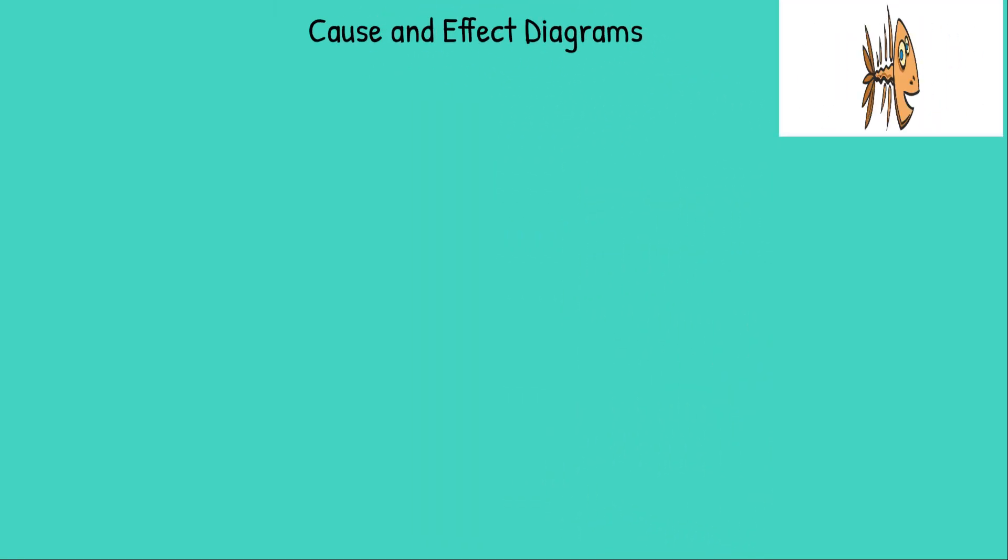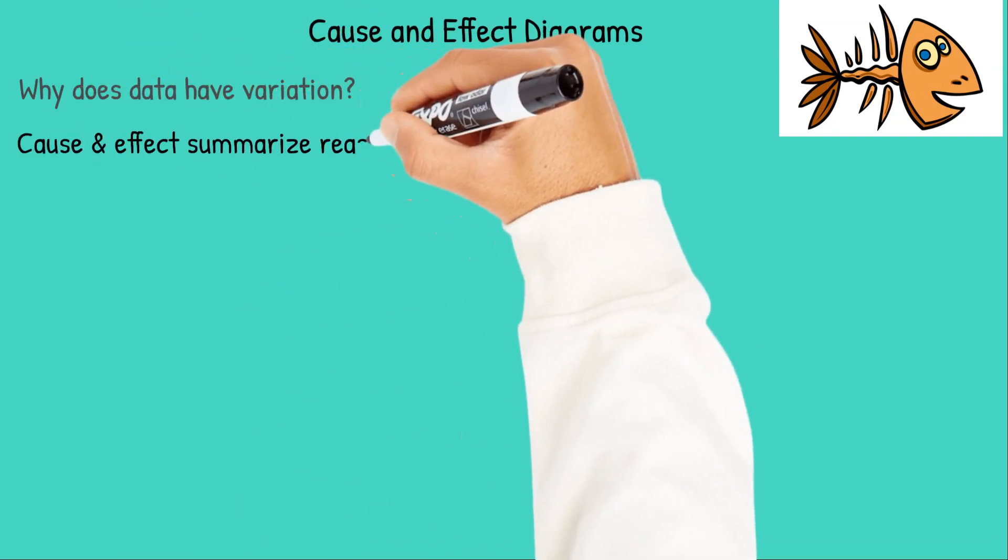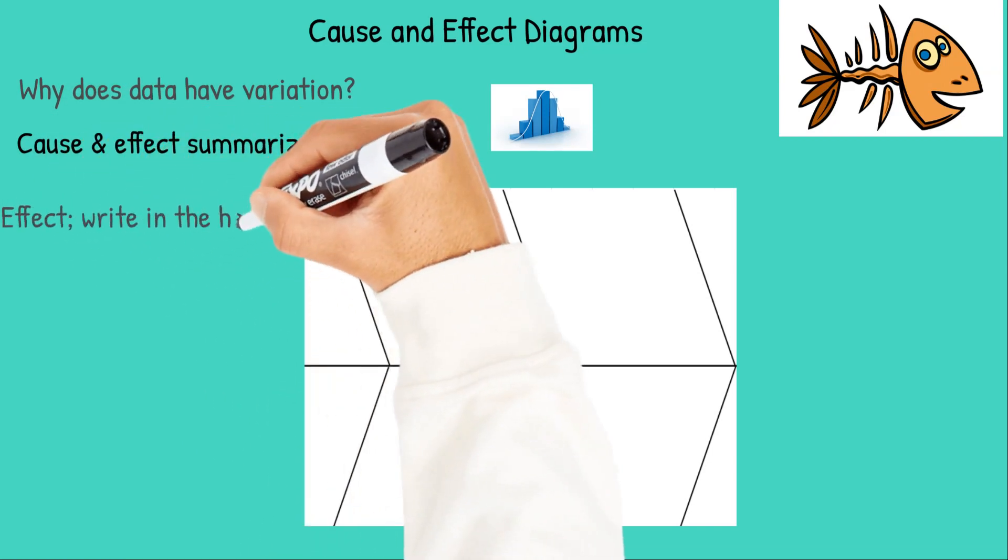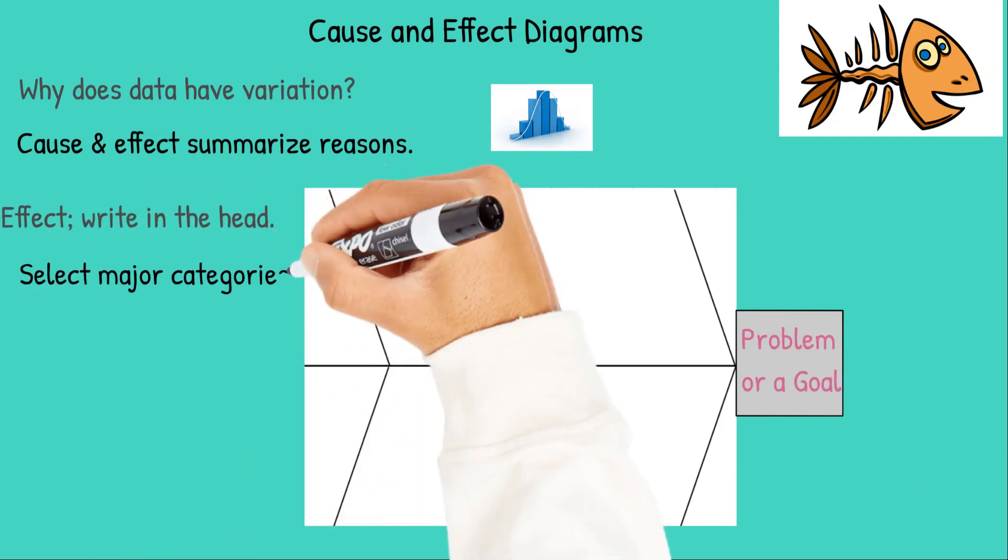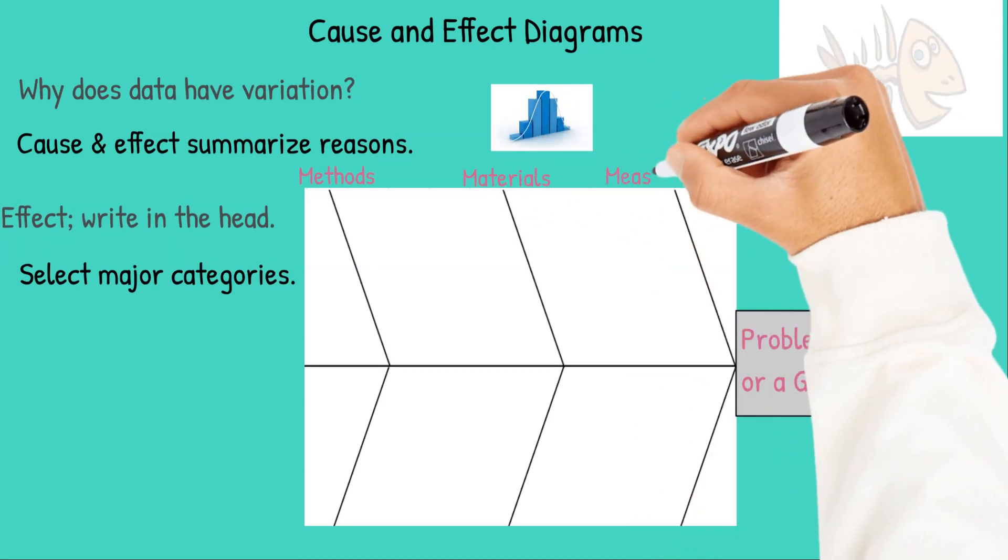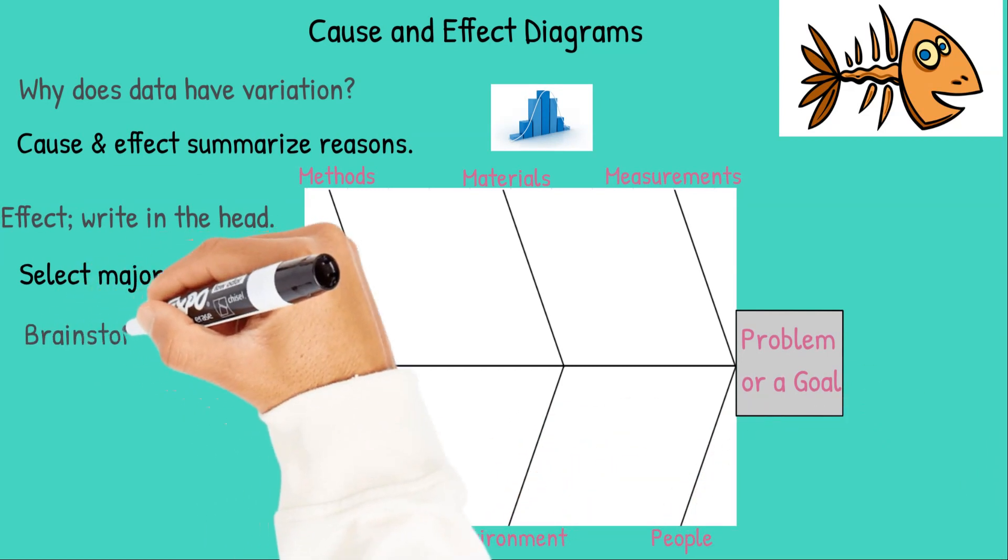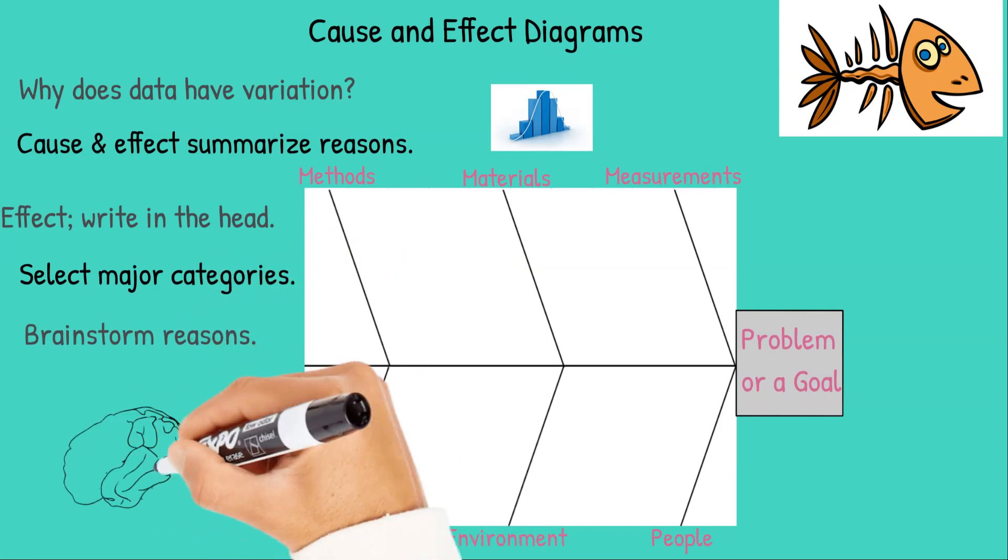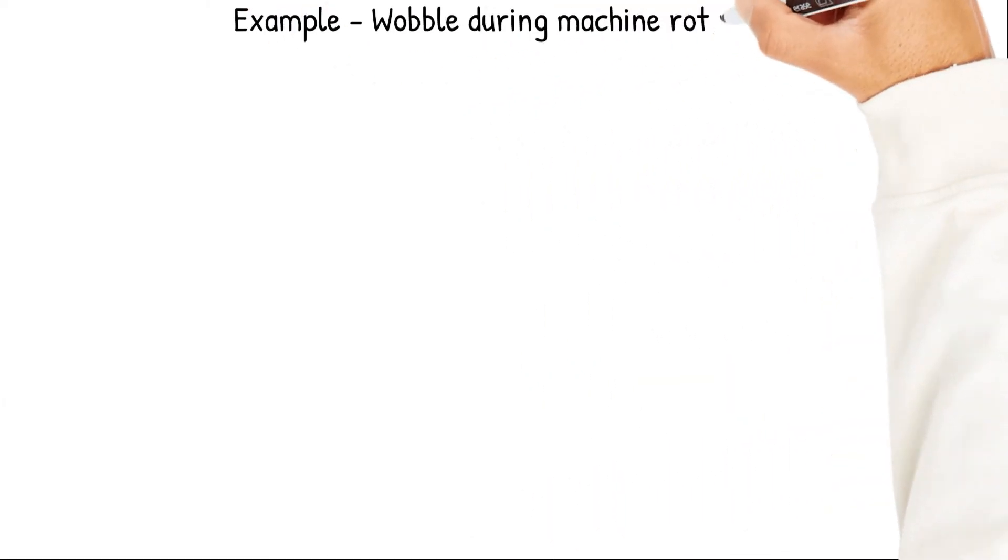The next quality tool is the cause and effect diagram. Because you have variation as shown in the histogram, why does the data have variation? The cause and effect diagram helps you figure this out. You start by writing the problem or the goal in the head of the fishbone. You select the major categories: methods, materials, measurements, machines, environment, and people. Then you brainstorm reasons onto the diagram and it begins to look like a fishbone.